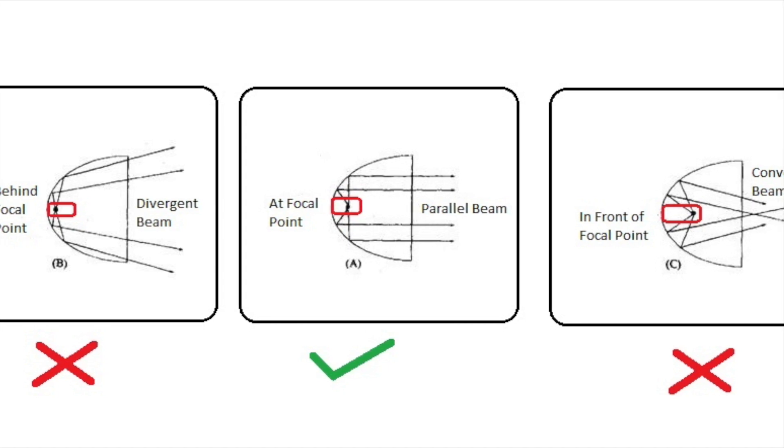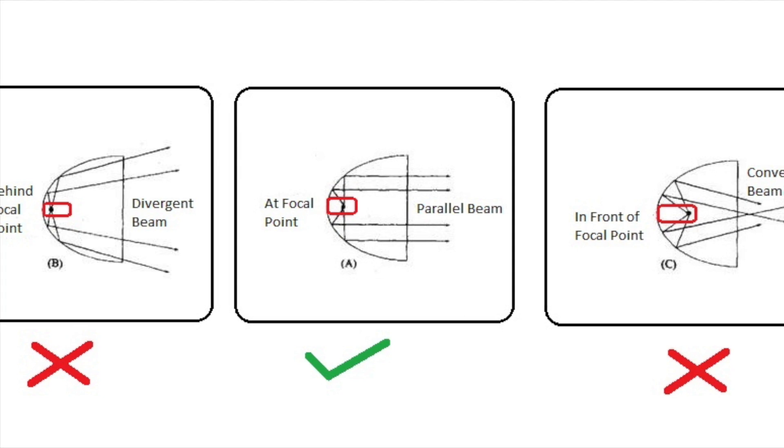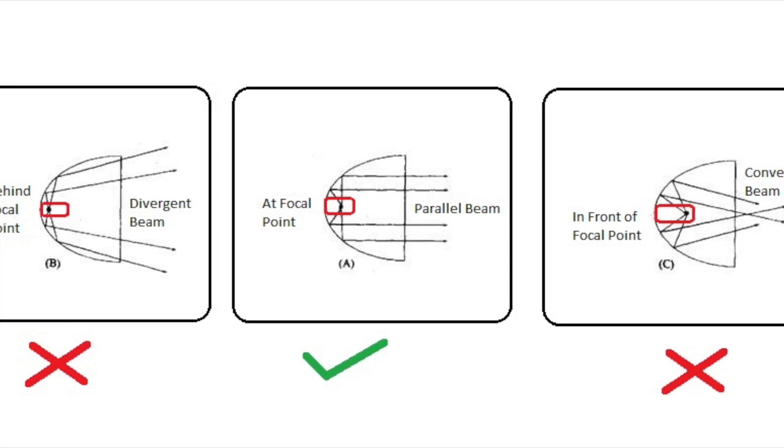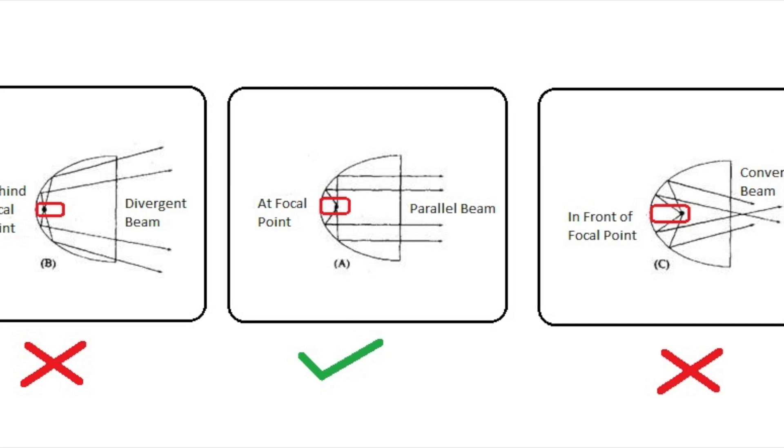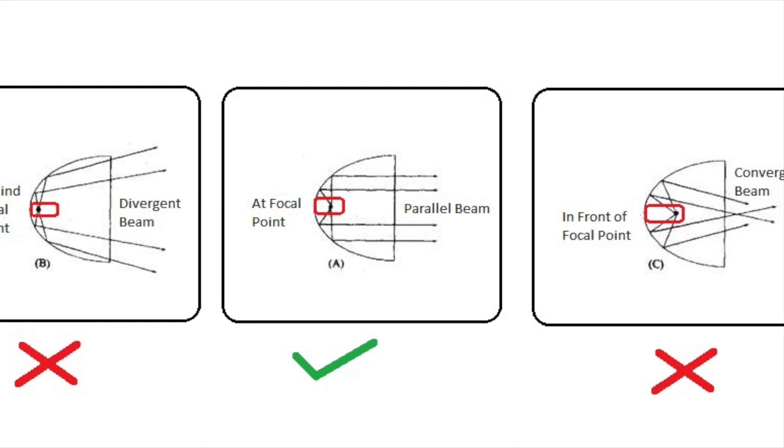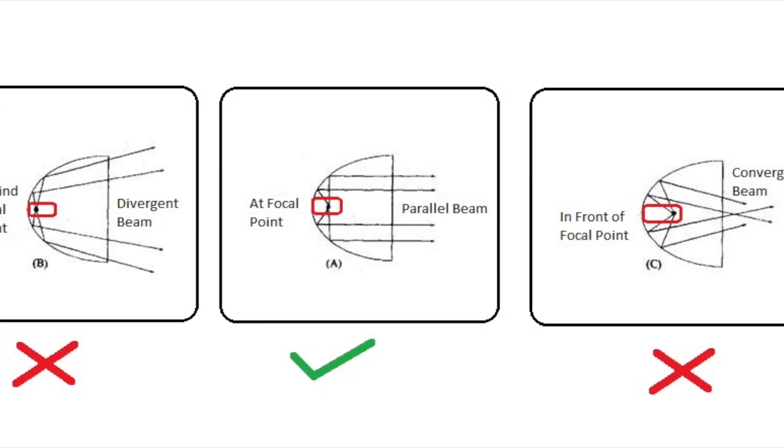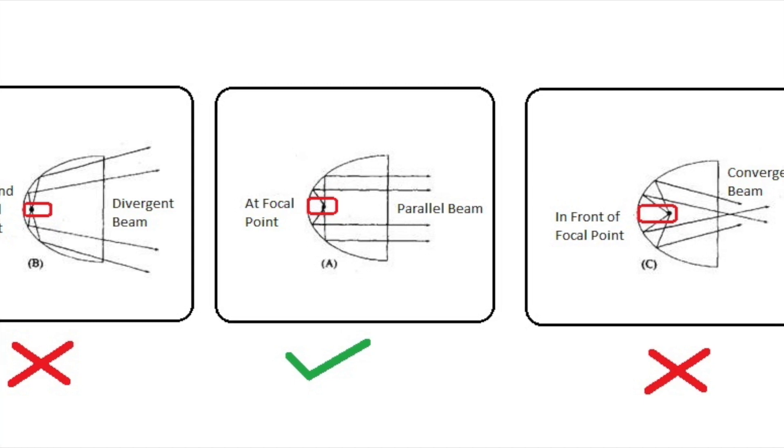So the filament which is at the proper focal point of the reflector, as in the center image, the light is getting reflected here also, but because the filament is at the position of the focal point, the light is getting reflected properly and is thrown as desired through the reflector.